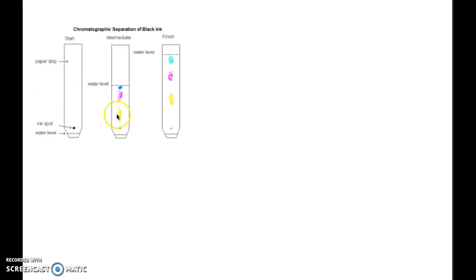different dyes will be attracted differently to the water, which is the mobile phase in this case because it's moving. As a result, it will be pulled up by that water depending on how much attraction that dye feels towards the water. This is electrostatic attraction, this is polar substance attraction.